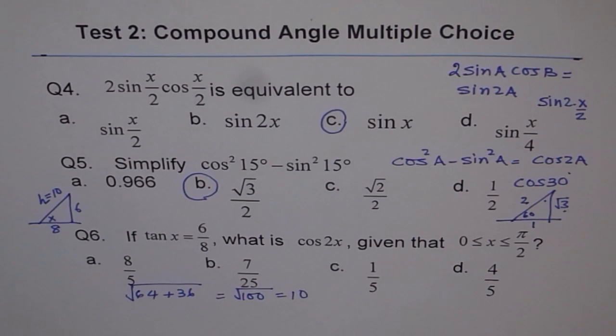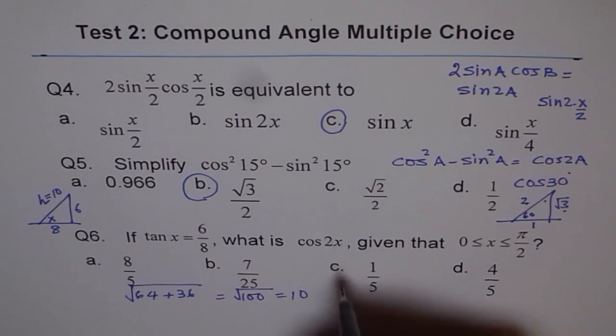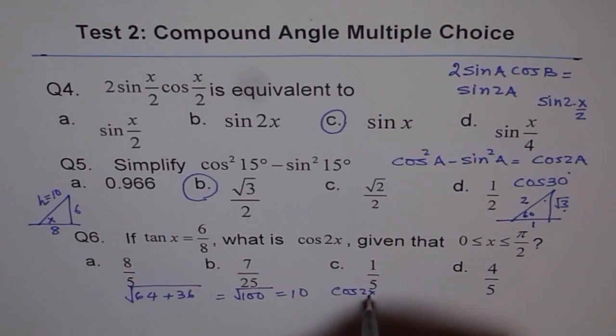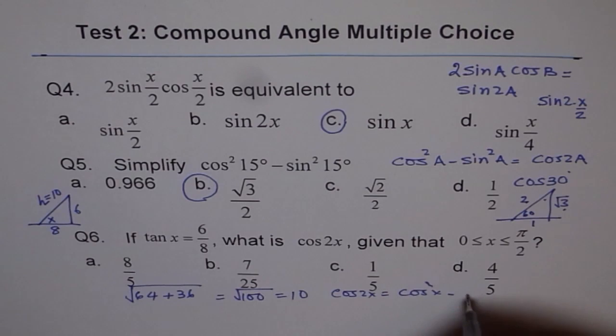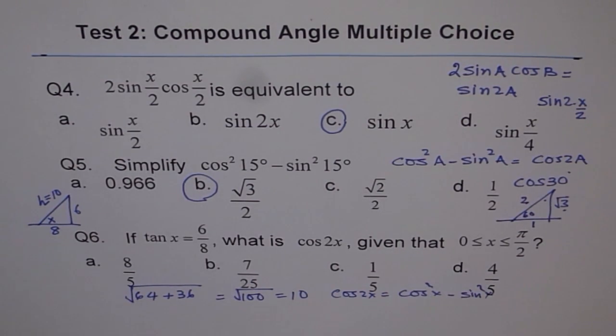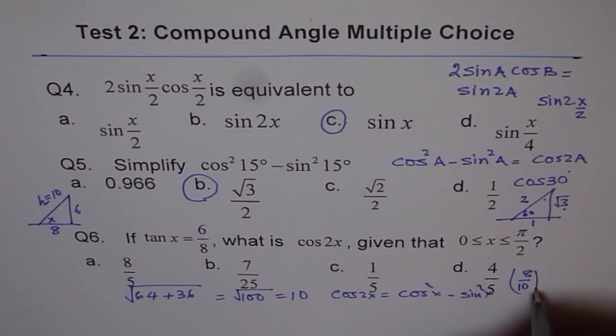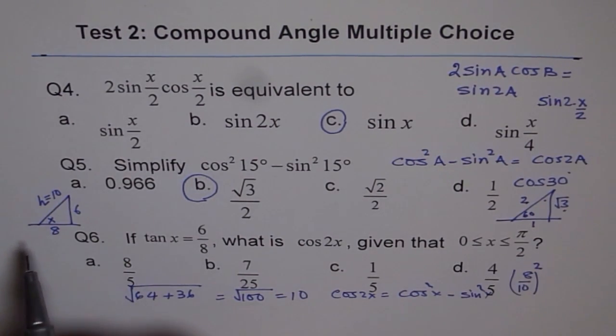Now, cos(2x) equals cos²x - sin²x. What is cos²x? Cos²x is (8/10)². So we have (8/10)².